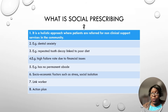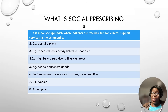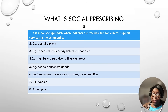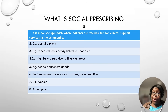Social prescribing is a holistic approach where patients are referred for non-clinical support services in the community. It is all about treating the person as a whole and treating the underlying problems. At times people come and visit us for treatment but they have underlying issues we are not aware of, and if you are only focusing on the teeth it means you are always going to have the same problem repeating itself.